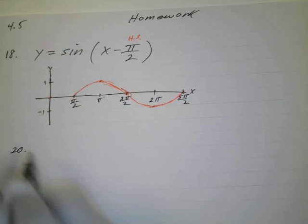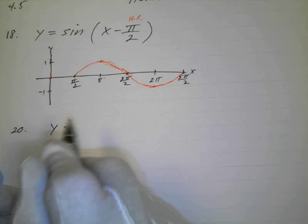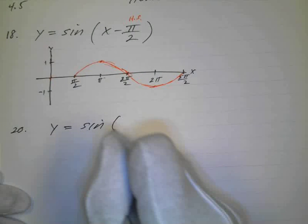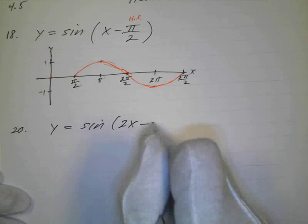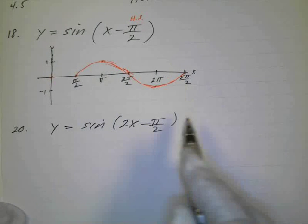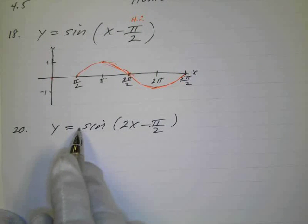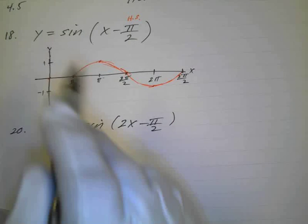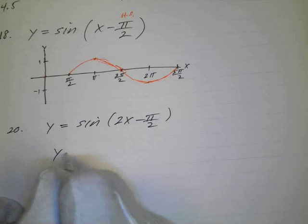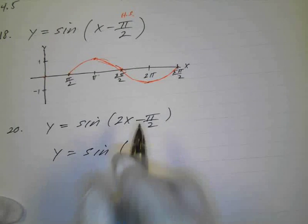Okay, let's take a look at number 20. We're going to write the equation first: y equals sine of 2x minus π/2. Again, there's no vertical shift, and there's no amplitude change, so my amplitude is going to be 1. But I've got some stuff going on over here — it always has to be x by itself, so I want to get rid of that 2. I'll write y equals sine and factor out this 2.